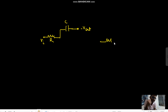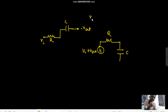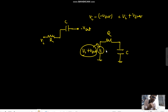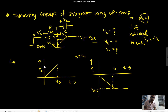So basically your R and C are connected between Vin and minus Vsat. The voltage drop across R and C is Vin minus of minus Vsat, which equals Vin plus Vsat. So this Vin plus Vsat will charge the capacitor, and it would charge up to Vin plus Vsat at steady state.